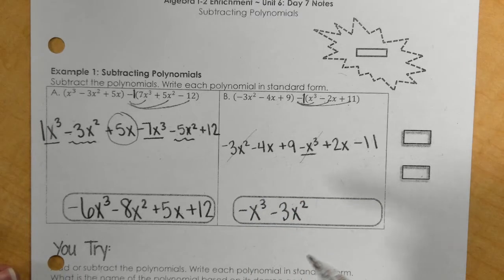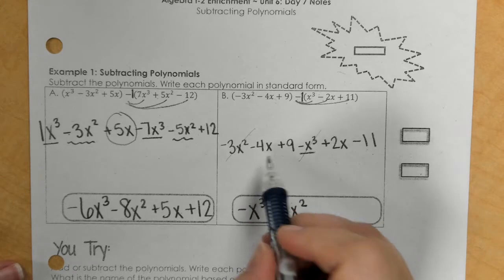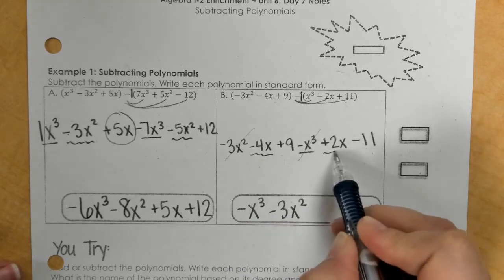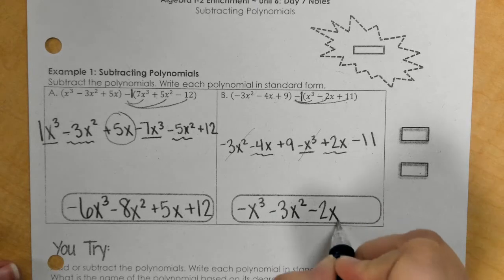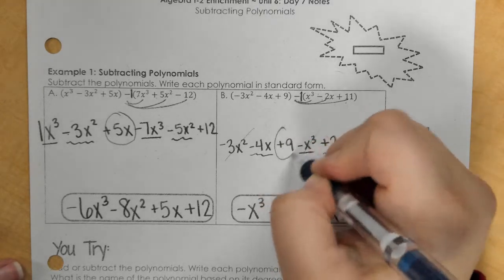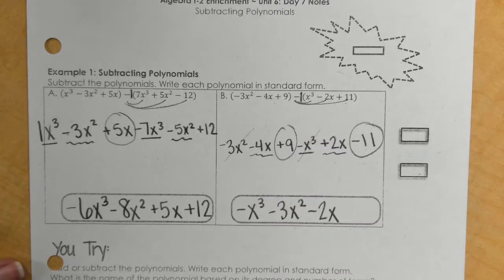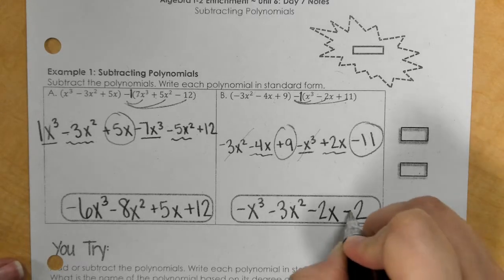Then I have x. Looks like I have a negative 4 and a positive 2x, so that makes negative 2x. And then I have a 9 and a negative 11. And that makes negative 2 once combined.